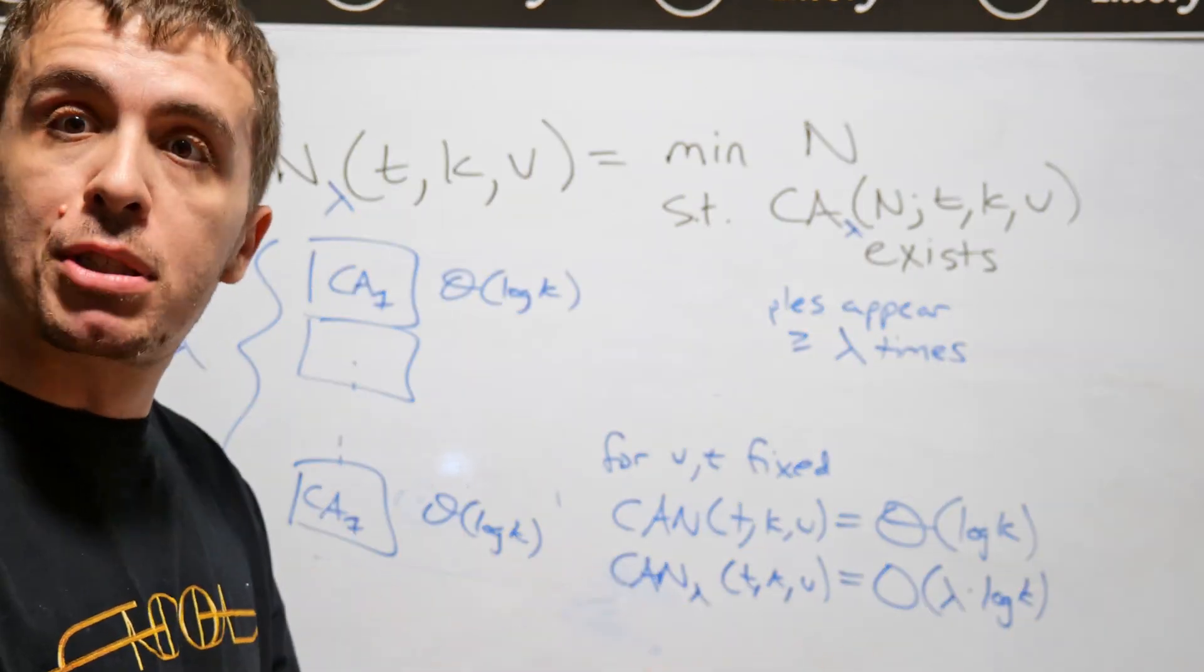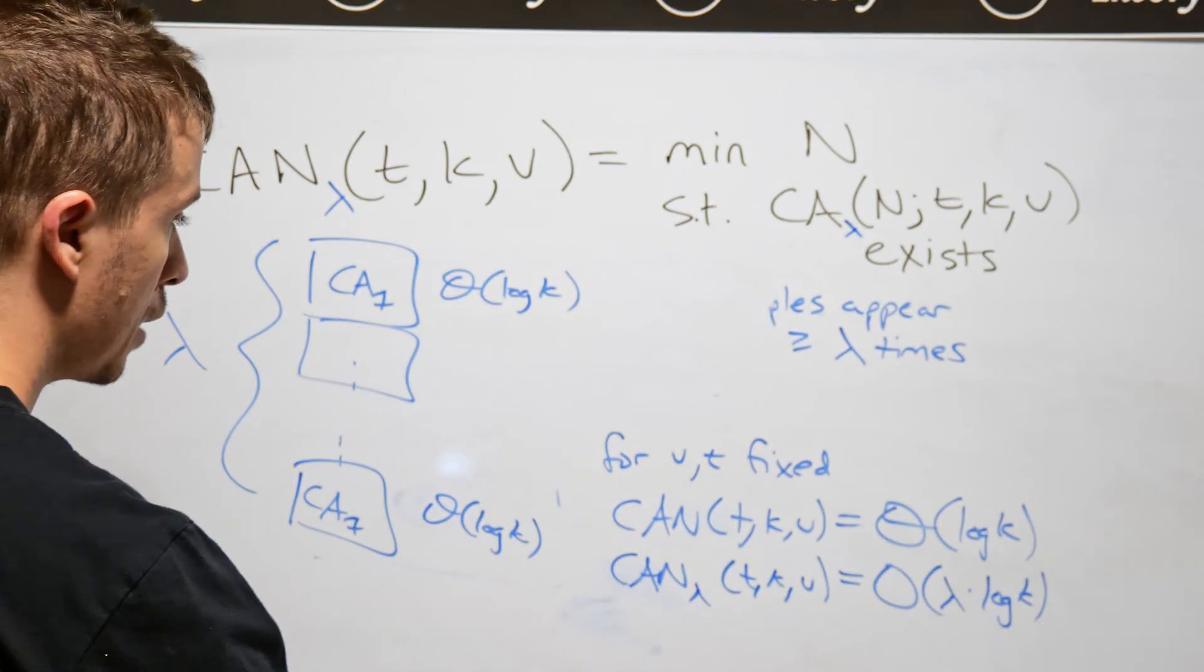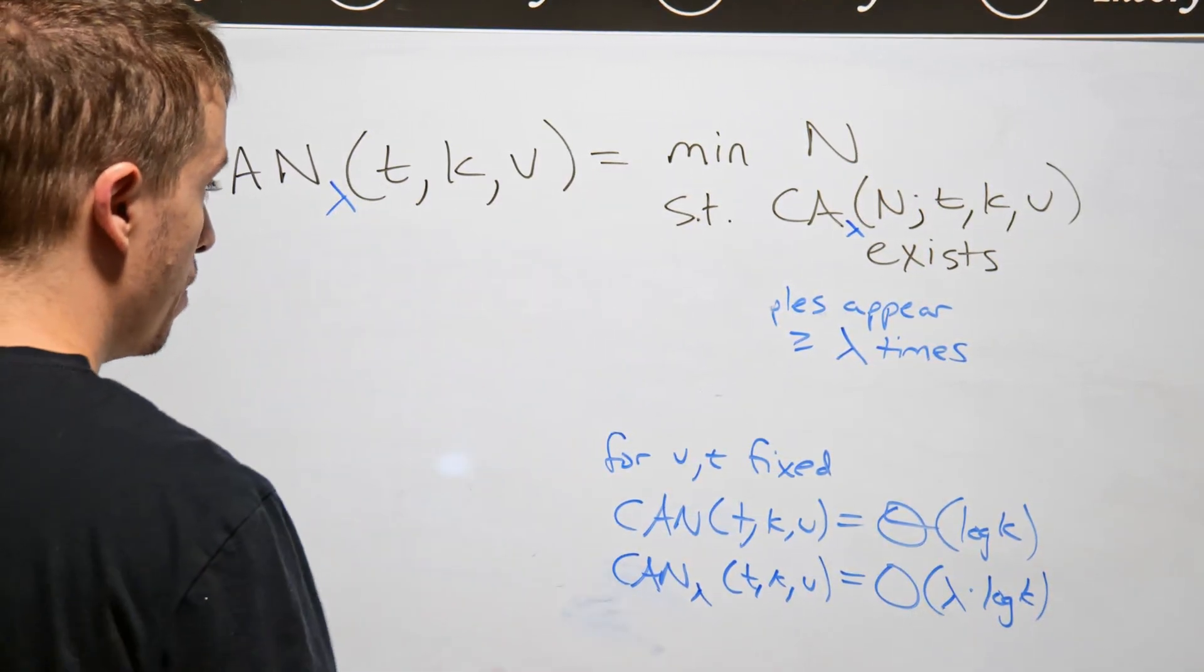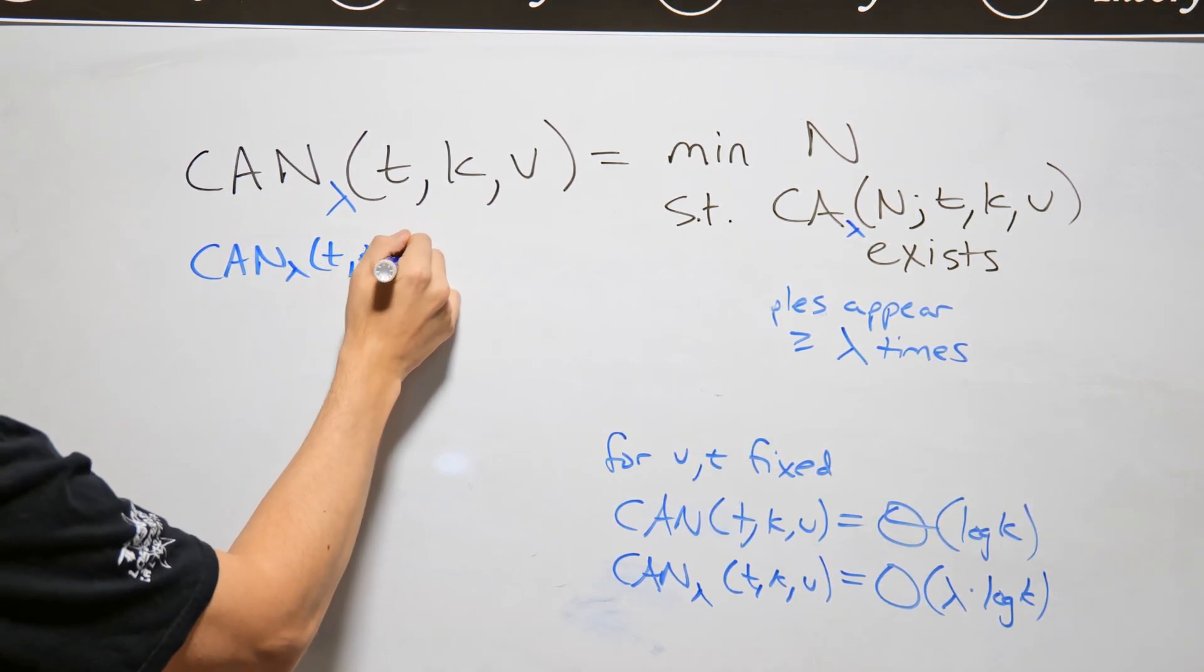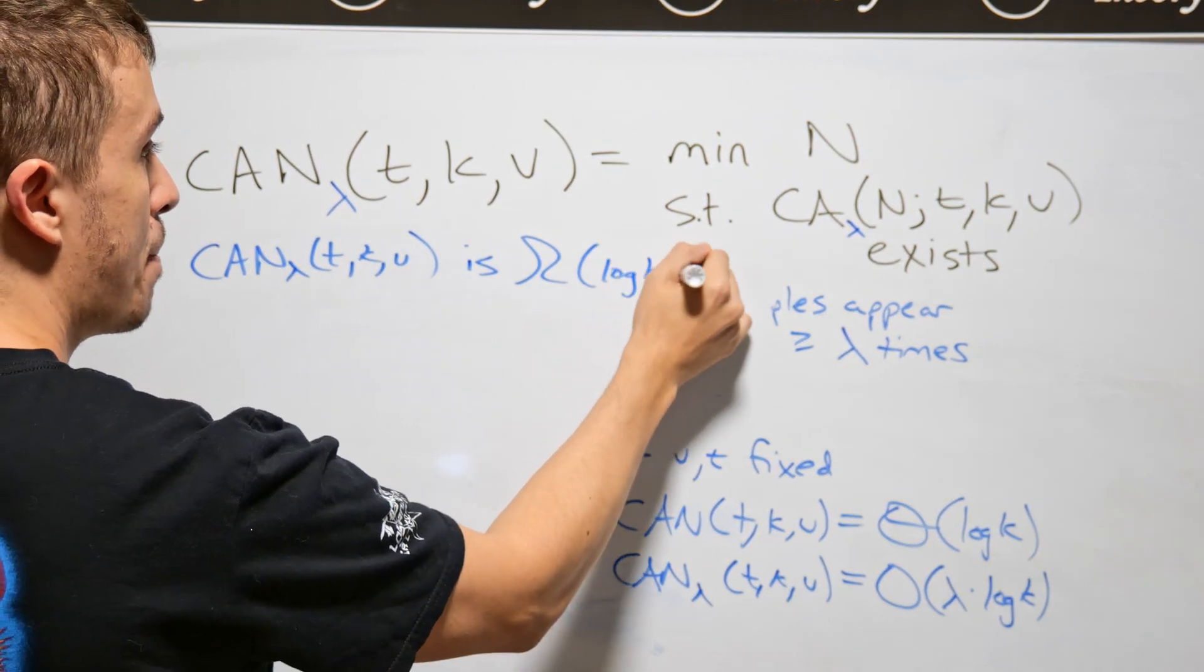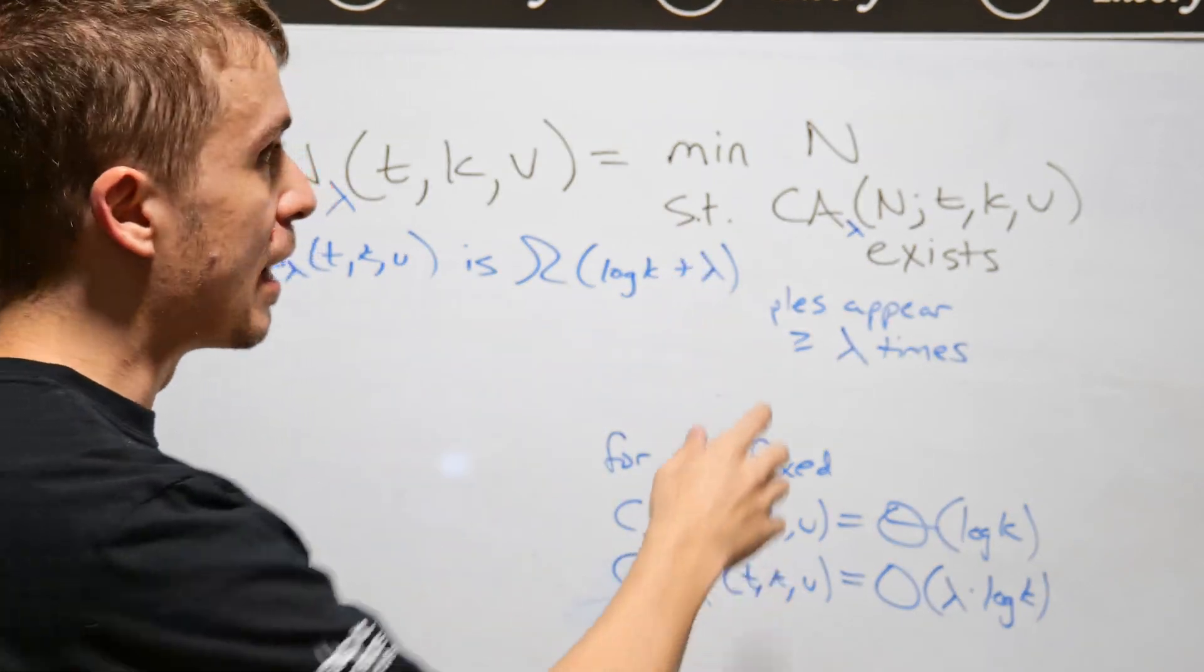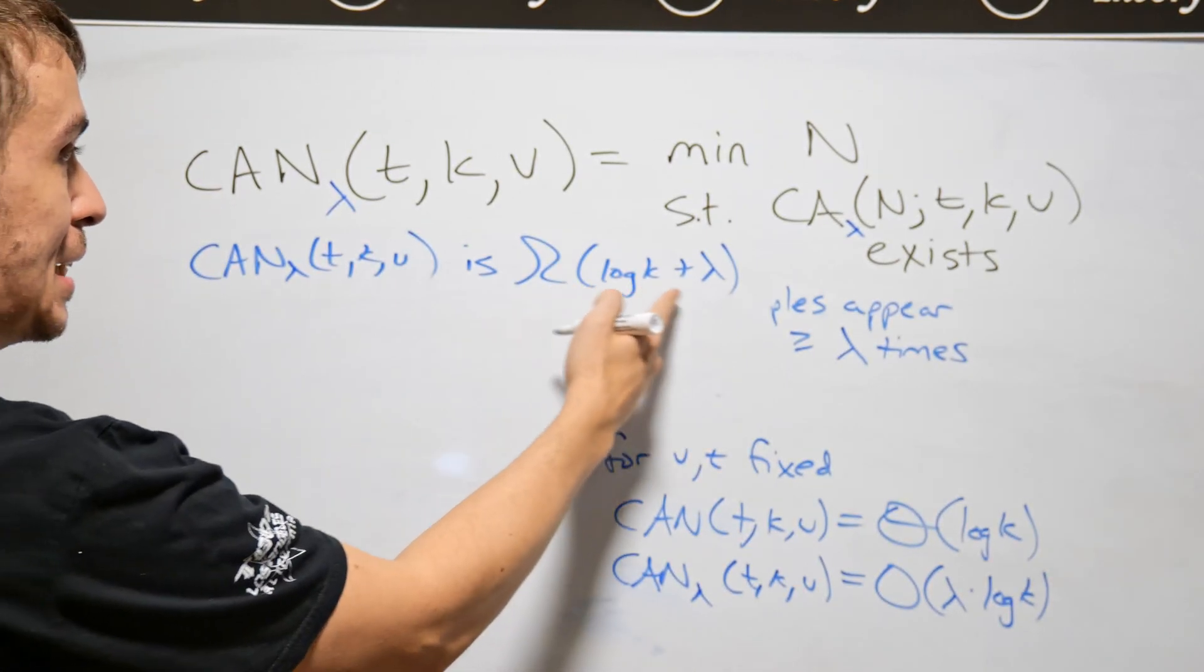And it turns out that it's not. So if we look at what the lower bound can be, we can easily show that CAN t k v with index lambda is big omega log k plus lambda. No matter what you do, it must be at least linear in lambda plus the log k that we've seen before. And why is this true?